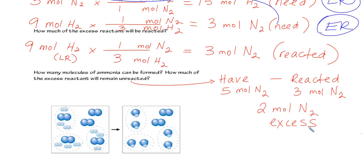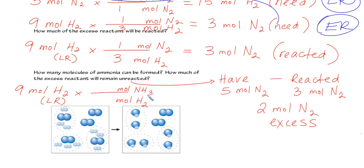We can apply the same concept to find how many molecules of ammonia can be formed. Starting with the limiting reactant, nine moles of hydrogen, we cancel hydrogen and switch to the product ammonia using the 2:3 ratio from the balanced equation, which gives us six moles of ammonia formed.